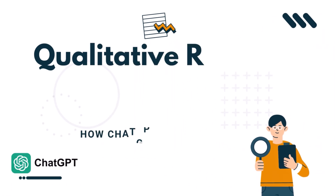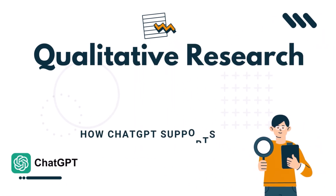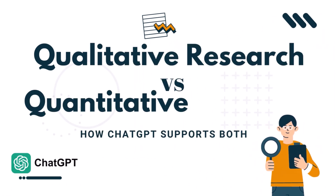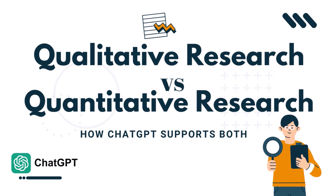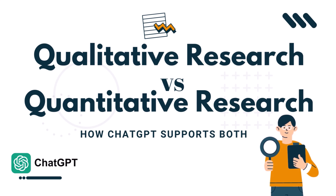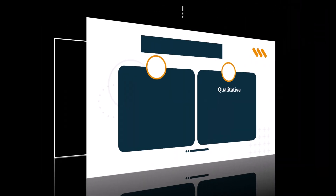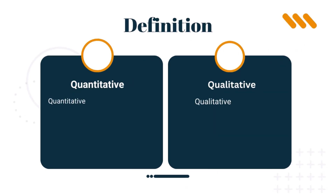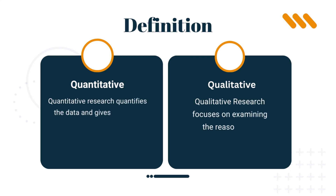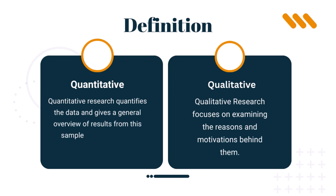The understanding and application of the relevant methodologies is critical in a dynamic field of research. There are different purposes in the two principal methods of research: qualitative and quantitative. Quantitative research quantifies the data and gives a general overview of results from a sample to an interested population, but qualitative research focuses on examining the reasons and motivations behind them.